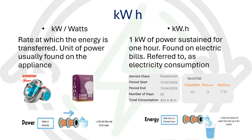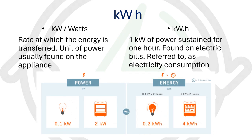For example, if you have a 100-watt or 0.1-kilowatt bulb and a 2-kilowatt dishwasher at your home and you run both of them for two hours straight, the tariff will calculate it as 0.2 kilowatt-hours for the bulb and 4 kilowatt-hours for the dishwasher, totaling 4.2 kilowatt-hours.